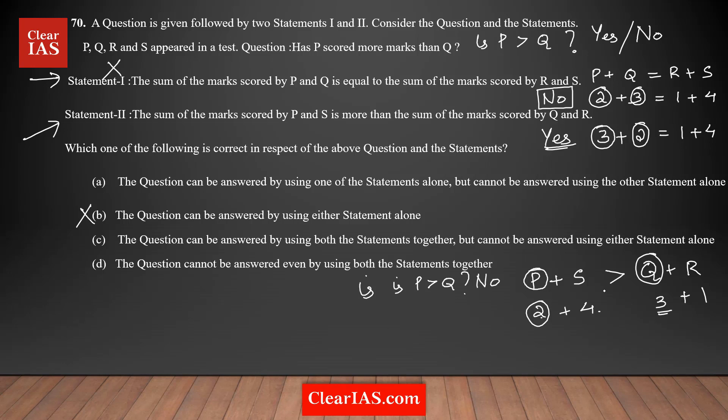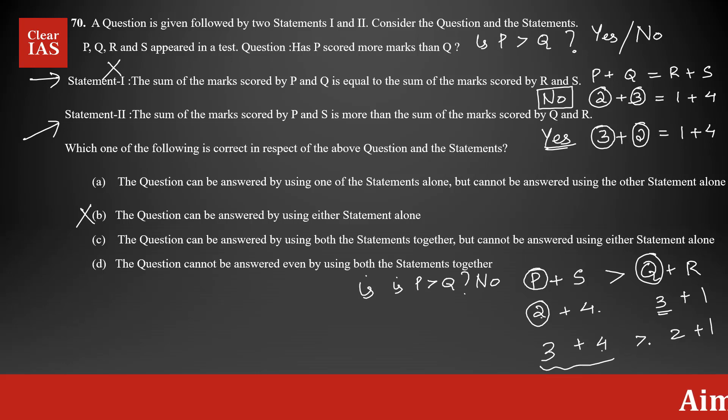Now what happens if I am switching the values between P and Q? Let's say this is 3 and this is 2 and this is the same. The inequality is the same. 3 plus 4 and this is 2 plus 1. 7 is greater than 3, yes. Now what is the answer you are getting? Is P greater than Q? Yeah, it's a yes. That means you are getting a yes as well as a no.